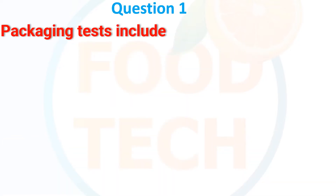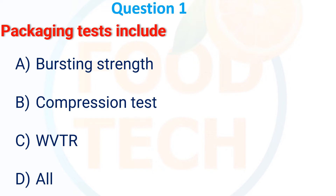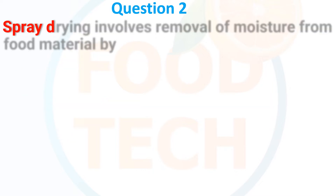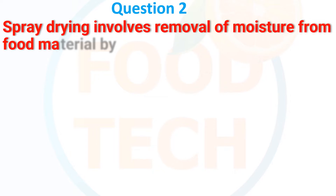The first MCQ: A packaging test includes which of the following? Options: (A) Bursting strength, (B) Compression test, (C) WVTR, and (D) All of the above. The correct option is D — all.